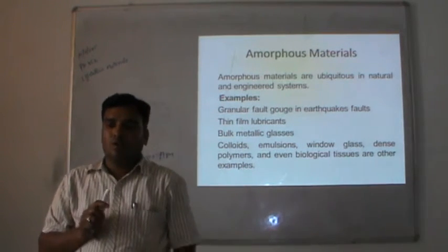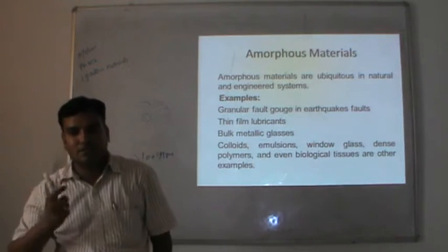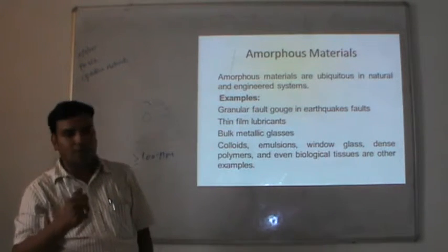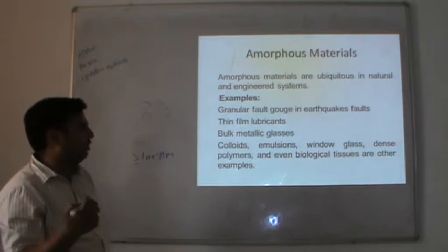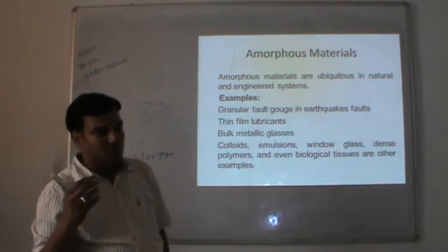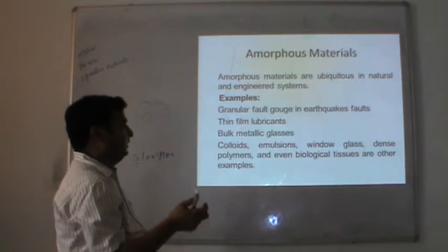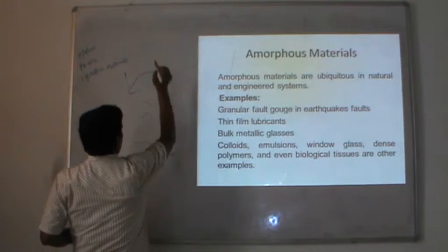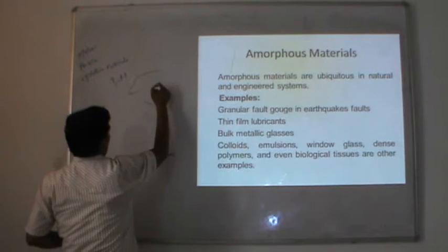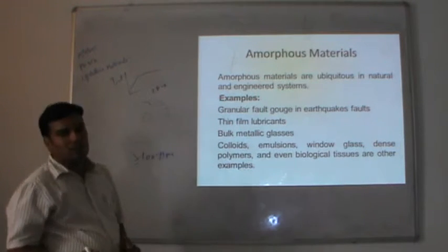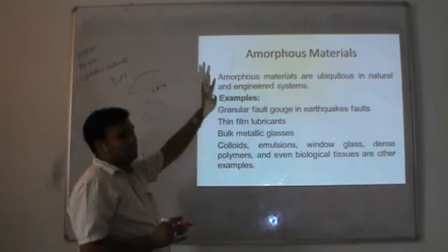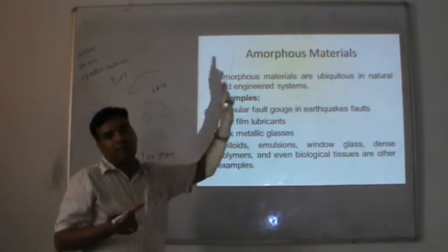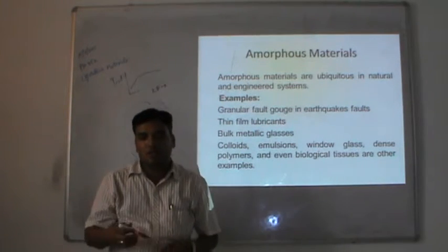Amorphous materials are ubiquitous in natural and engineered systems. Examples include the bulk metallic glasses and thin film lubricants. When we talk about glassy materials, they do not show any type of X-ray diffraction peaks. Practically, X-ray diffraction of a crystalline material will give you information about the structure or crystalline arrangement.